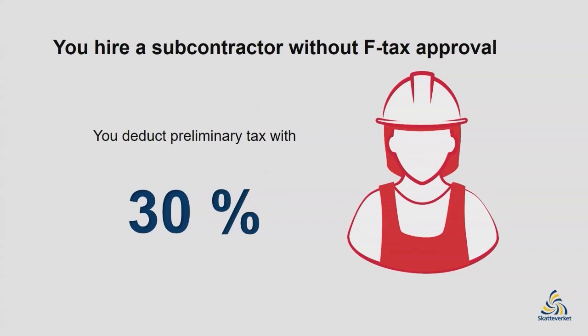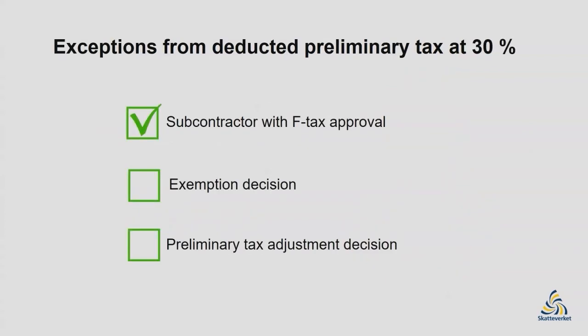There are however three exceptions from the requirement to deduct preliminary tax. The first exception is if your subcontractor has F-tax approval. The second is if your subcontractor has an exemption decision from the Swedish Tax Agency that shows that you are exempted from the obligation to deduct preliminary tax. And the third and last exception is if the Swedish Tax Agency has reached a preliminary tax adjustment decision regarding the subcontractor.